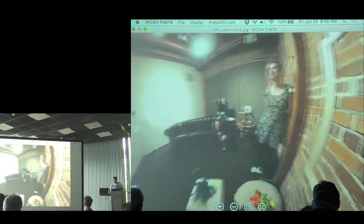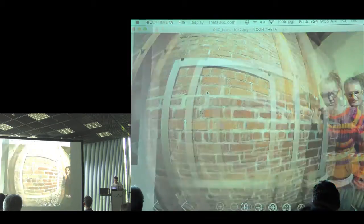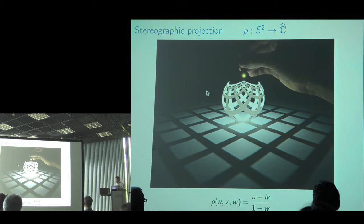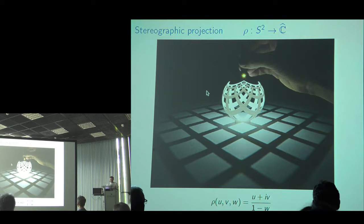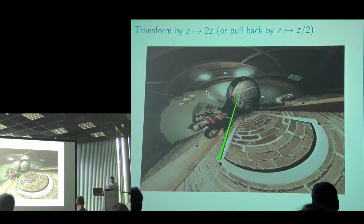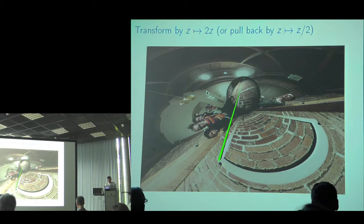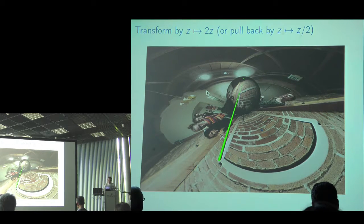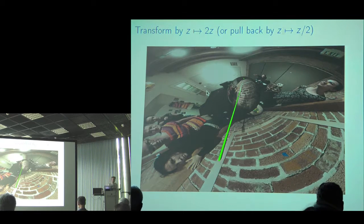Here's the in-sphere view of the same thing — we're in their office in San Francisco. To transform this sphere of data, we use stereographic projection to go to the Riemann sphere, i.e., the complex plane plus the point at infinity. The same formula applies. Once we have the image on the complex plane, we can apply all kinds of functions — for example, scaling by multiplying by two gives a new image, and we put it back onto the sphere using stereographic projection again.